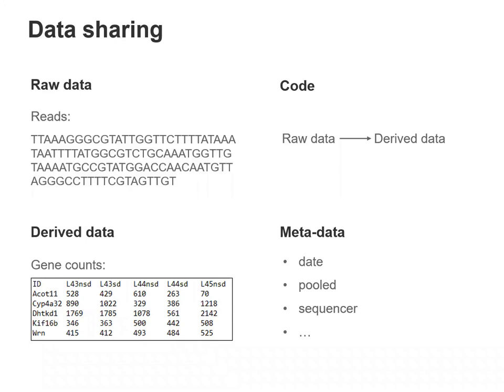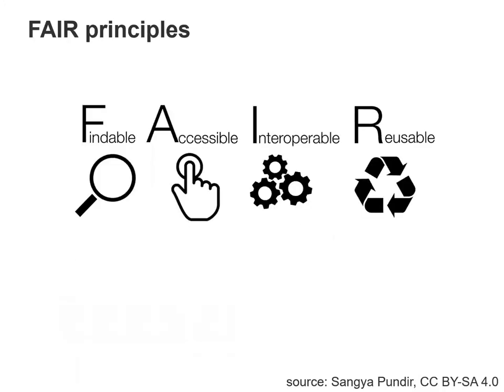For example, knowing which sequencer was used gives information about the accuracy of the measurement. To guide researchers to share the data, the FAIR principles were created. This initiative helps to consider the different aspects — a sort of theoretical checklist for data sharing.